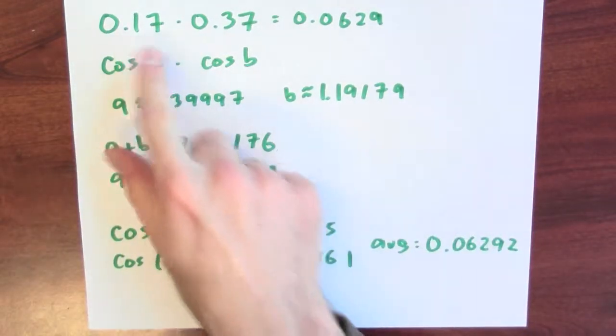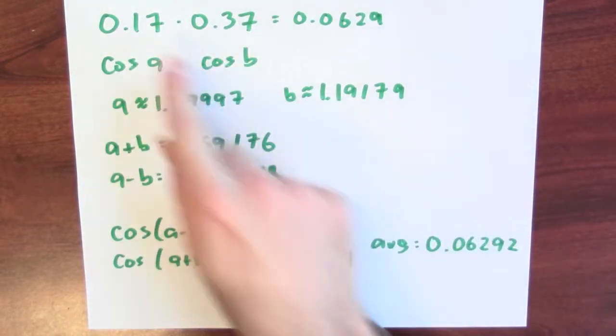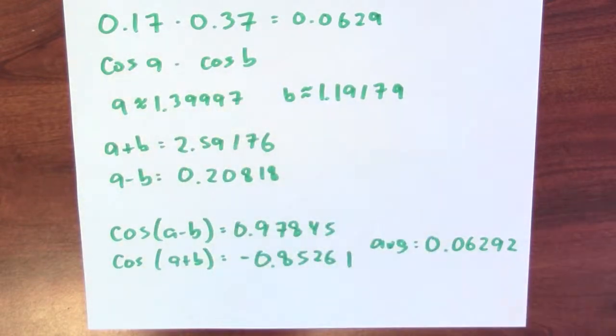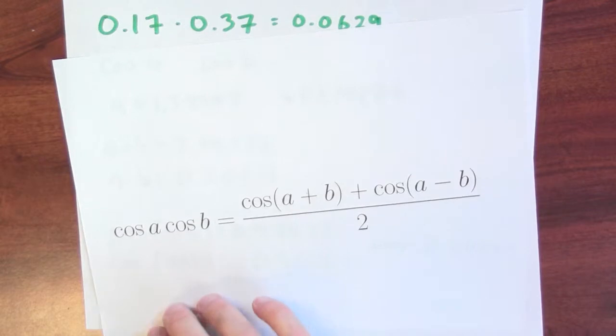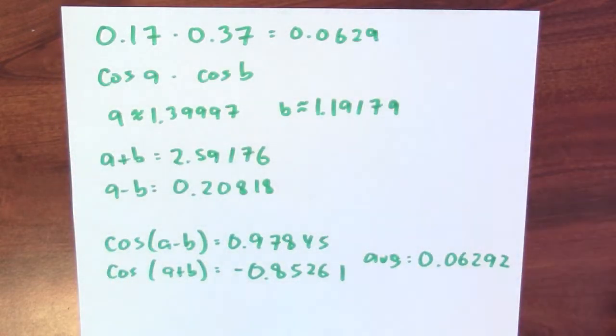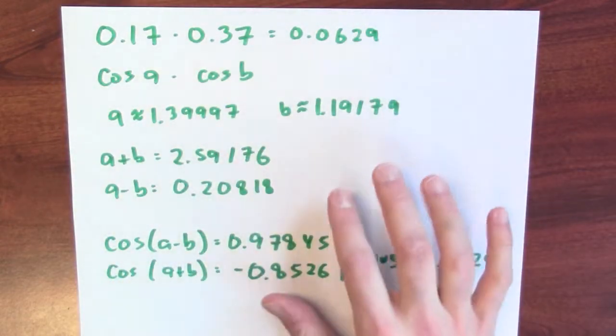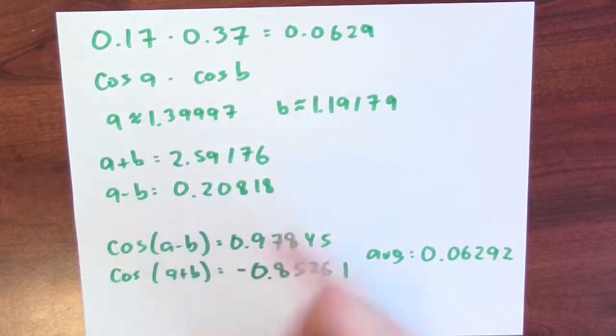We're managing to multiply together numbers by rewriting those numbers as cosines and using this formula that tells me how to multiply cosines. Instead of actually multiplying, I've replaced the multiplication with additions, differences, table lookups, and an average.